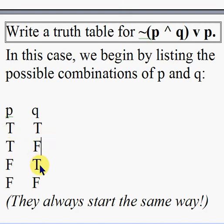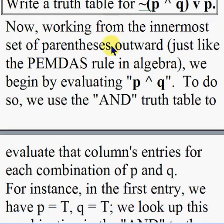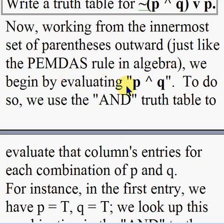We can tell what happens when P and Q are both true, when just P is true and Q is false, when just Q is true and P is false, or when both P and Q are false. Tip: they always start the same way. Now working from the innermost set of parentheses outward, just like the PEMDAS rule in algebra, we begin by evaluating P AND Q.